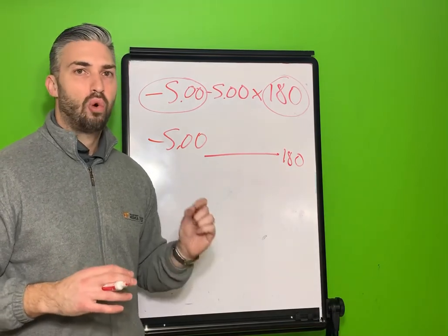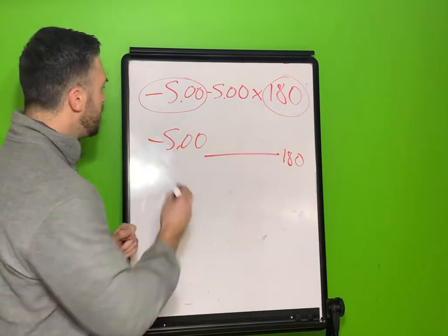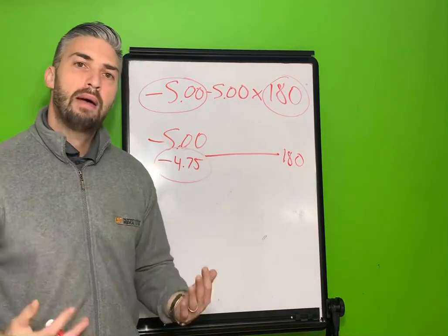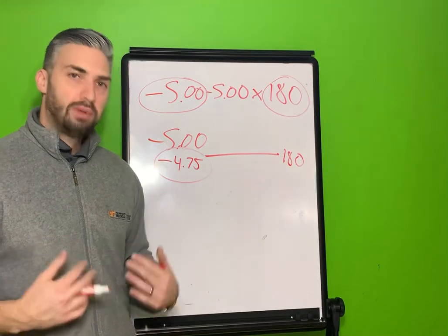So we know that negative 5 is going to be a negative 4.75 because the other thing we remember is that it always becomes more plus or less minus.